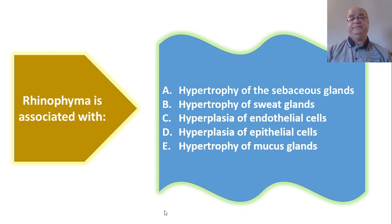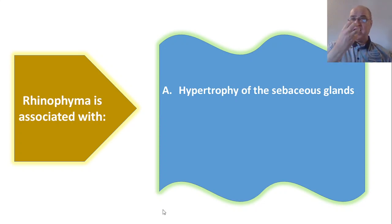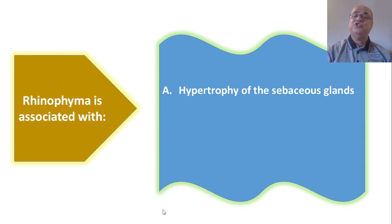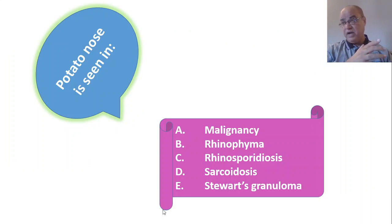Rhinophyma is associated with hypertrophy of sebaceous glands. The skin of the external nose at the tip is thick and contains sebaceous glands, while the skin lining the upper part of the external nose is thin and devoid of these glands. Rhinophyma is a benign tumor due to hypertrophy of the sebaceous glands. It is also known as potato tumor or potato nose, is confined to the tip of the nose, and is usually preceded by acne rosacea.